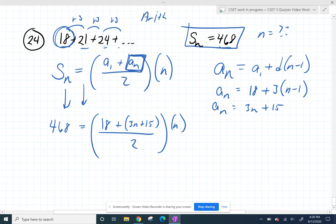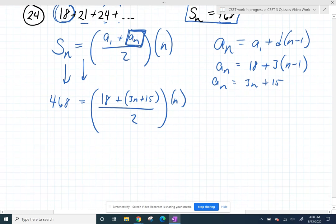So I'm just going to, I don't like that dividing by 2, so I'm going to clear the fraction and multiply both sides by 2. So I get 936, and then the 2s cancel.